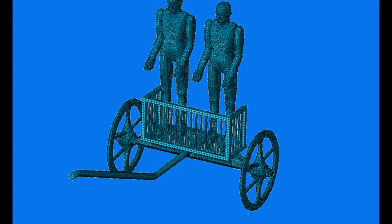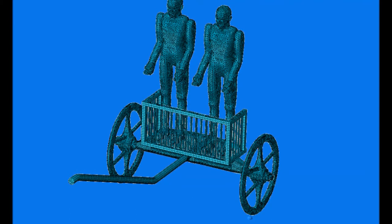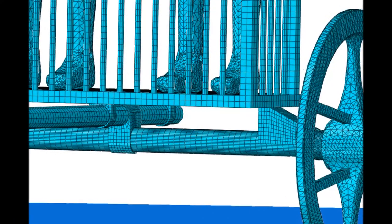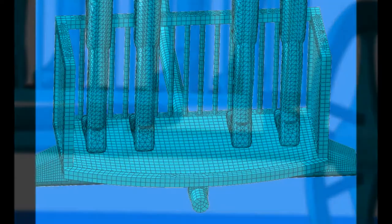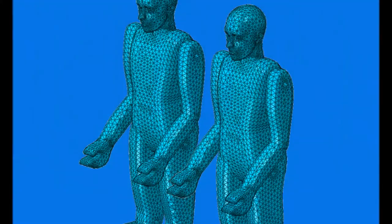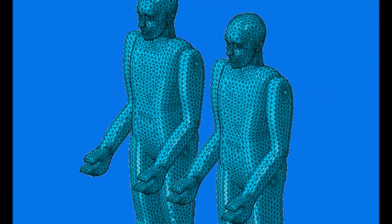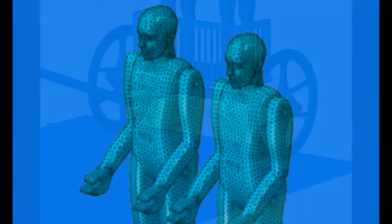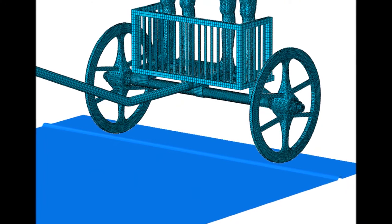The finite element models included the whole chariot with two passengers, the warrior and the charioteer. The chariot's structure was modeled by solid elements in hardwood, with linear elastic behavior. The joints and the floor were modeled in linear elastic materials as well, with elasticity properties of leather. The men were modeled with an arbitrary linear elastic material, with a total mass of 80 kg each. The soil was modeled as a rigid surface.